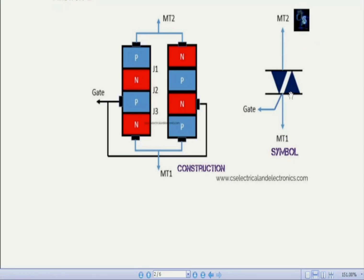It is a bidirectional semiconductor device that controls AC power. It is a controlled device. The power handling capacity of TRIAC is high. The firing angle of the TRIAC is 0 to 180 degrees and 180 to 360 degrees. It is used in fan control, light dimmers, and many more applications. The maximum rating of TRIAC is 16 kilowatts.